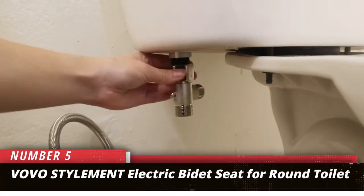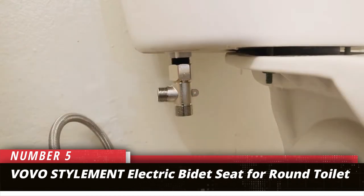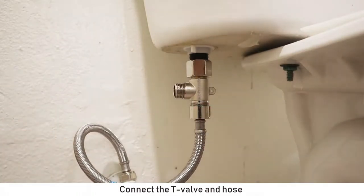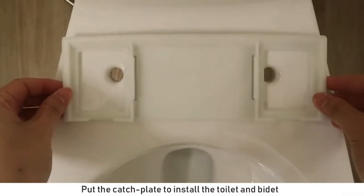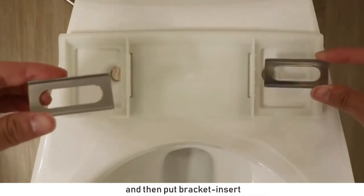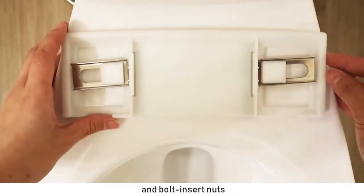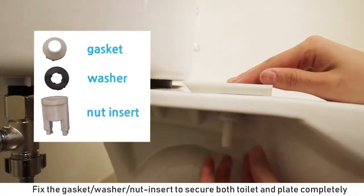Number 5. Volvo Stylement Electric Bidet Seat For Round Toilet. For a round-style toilet, you can't go wrong with this Volvo Stylement Electric Bidet Seat. Its 3-in-1 stainless steel nozzle does triple duty with feminine, posterior, and turbo wash functions in five different nozzle positions and levels of water pressure. That water can be heated to three different levels, from warm to hot, as can the seat and the dryer.